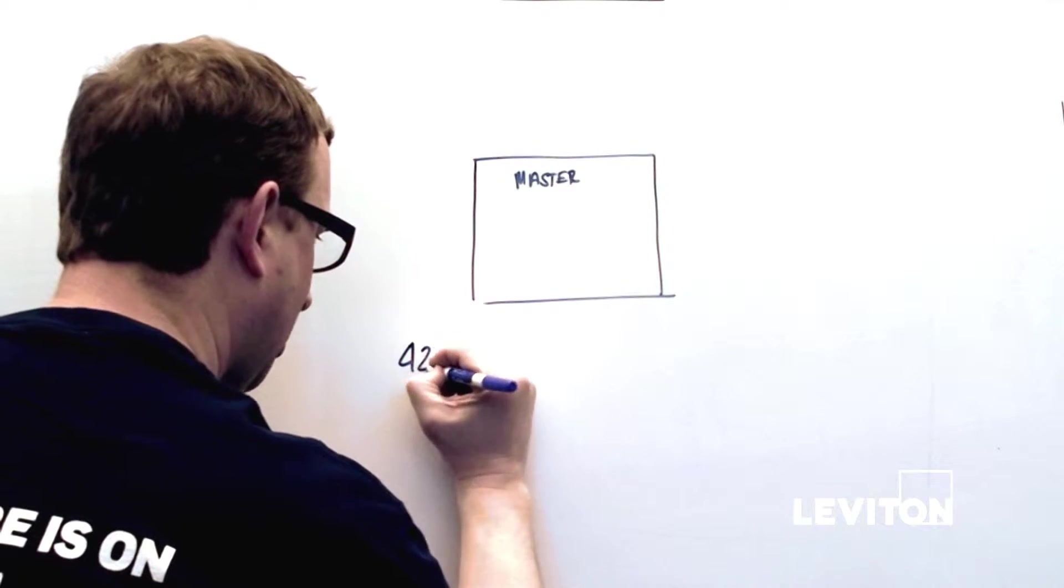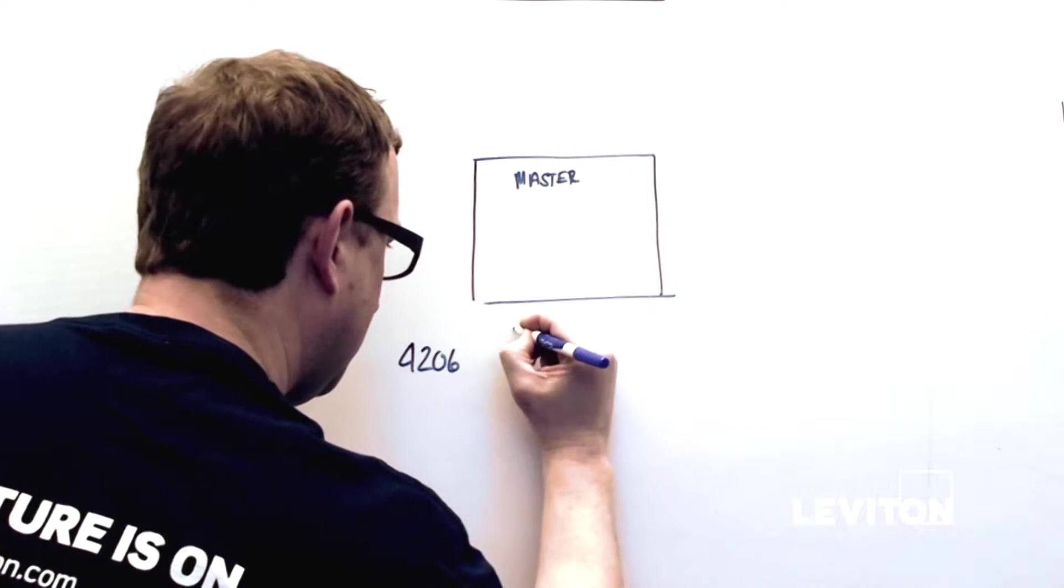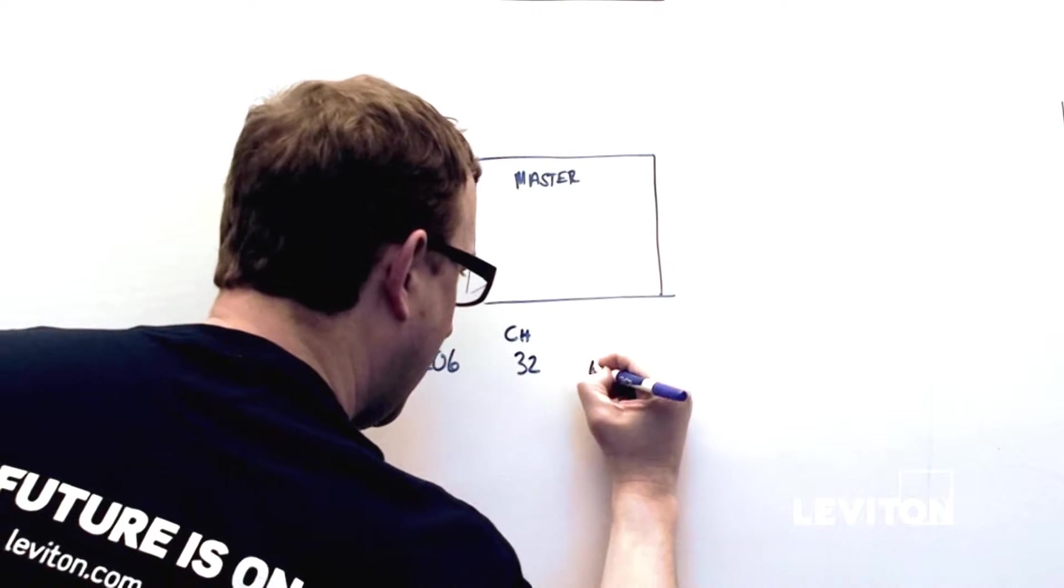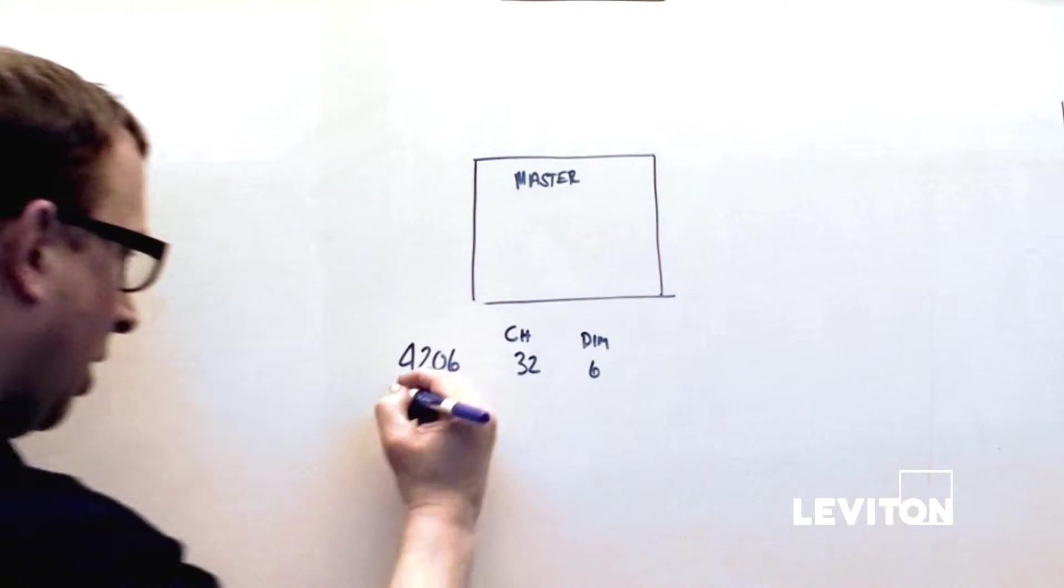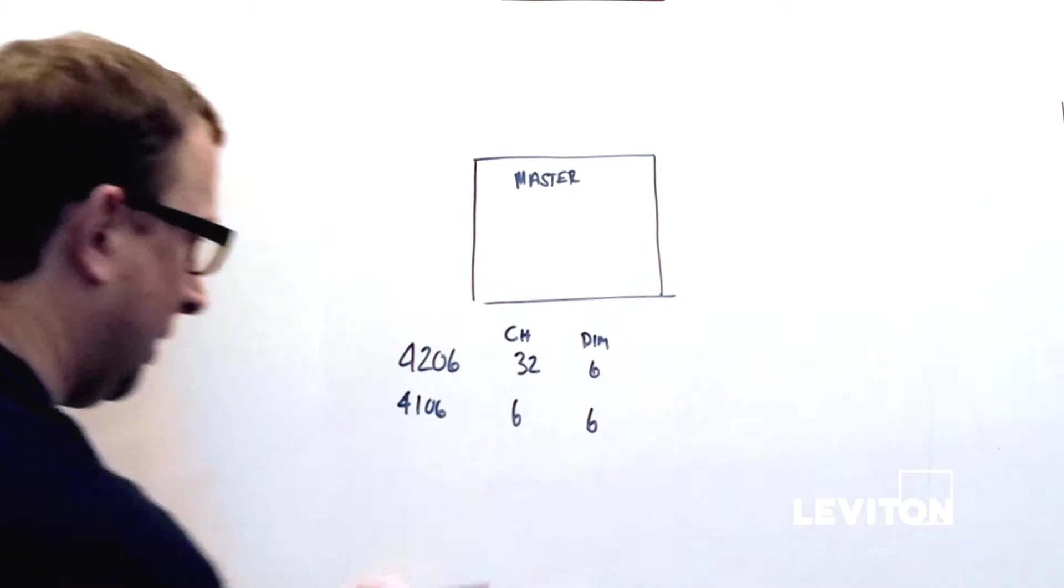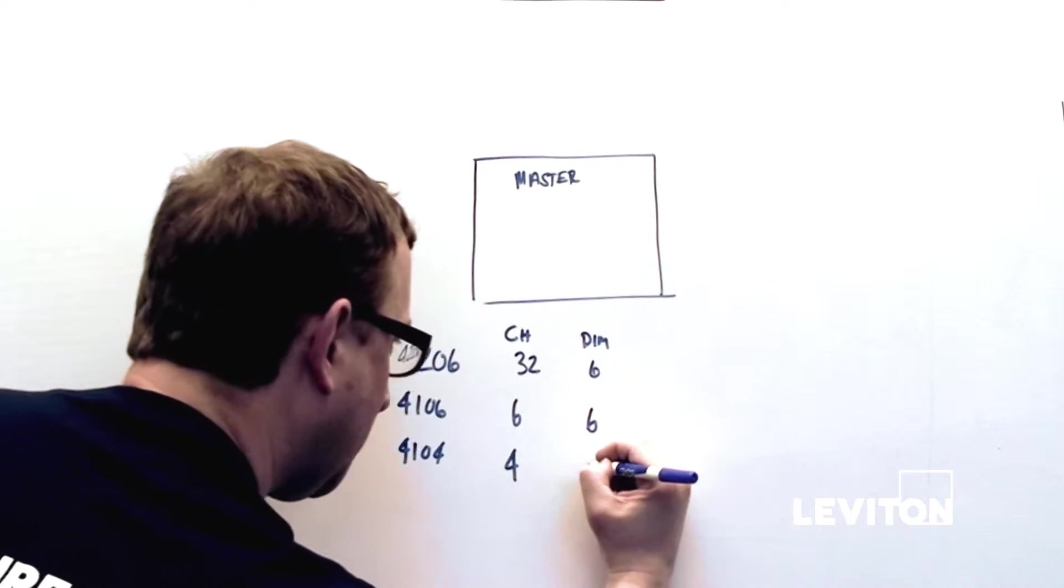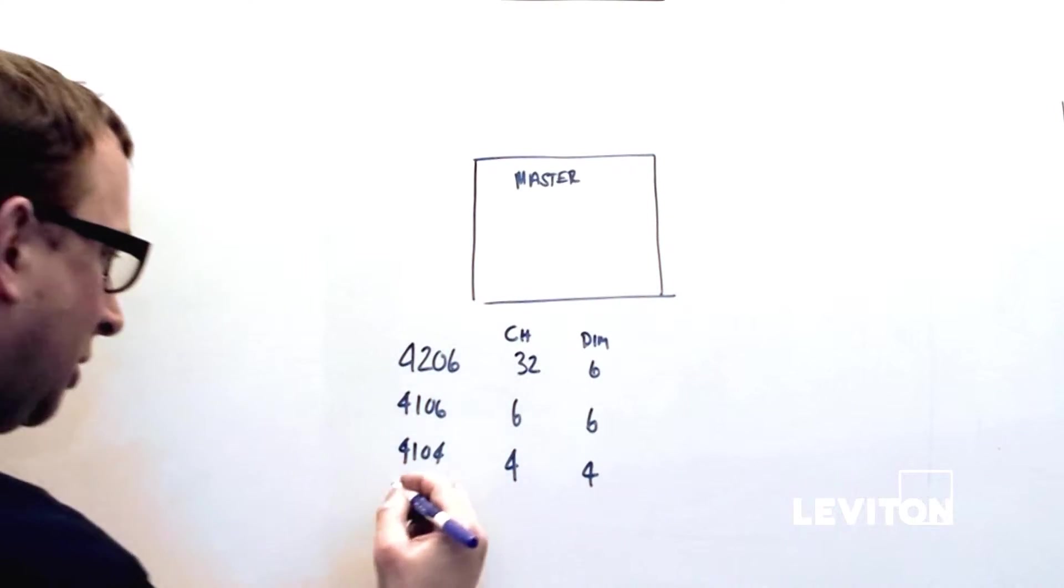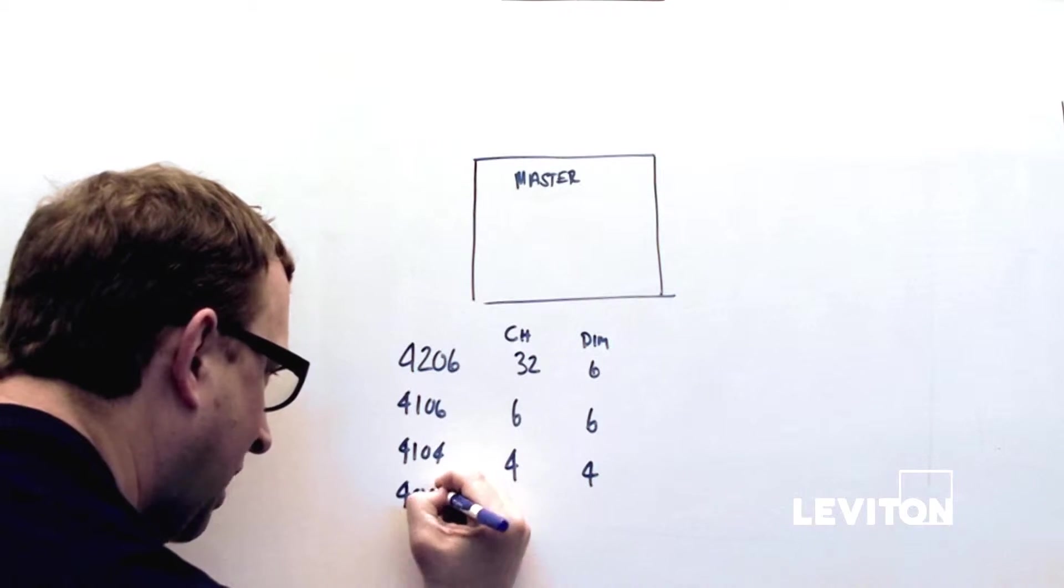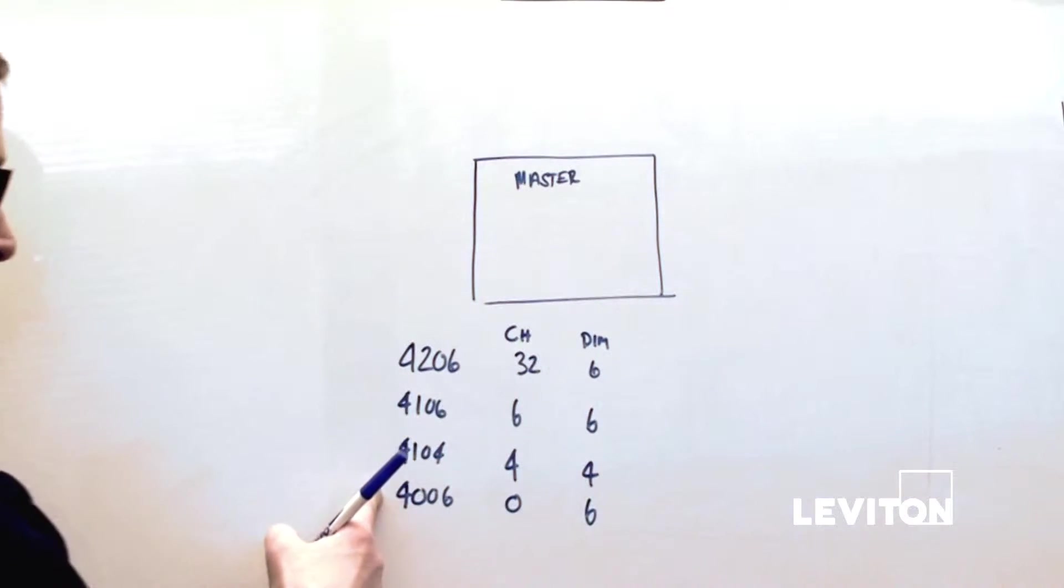We're going to start with the 4206. The 4206 is probably the most popular model. It has 32 channels and 6 dimmers. The 4106 has 6 channels and 6 dimmers. The 4104 has 4 channels and 4 dimmers. The 4006 has 0 channels and 6 dimmers. That's the model I was talking about earlier that we use for system expansion.